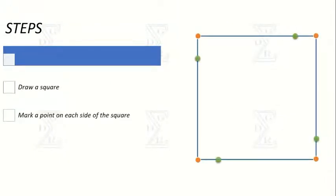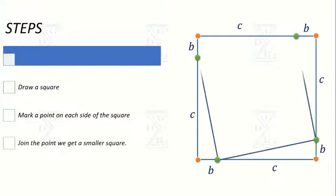Steps to prove the theorem: Draw a square. Mark a point on each side of the square which divides it in the b to c ratio. Join the points, then we get a square which is smaller than the original one.